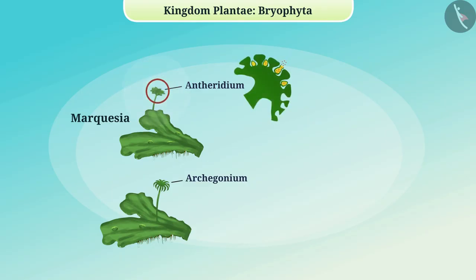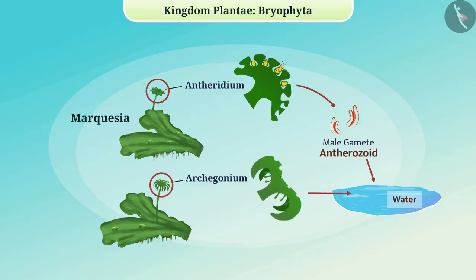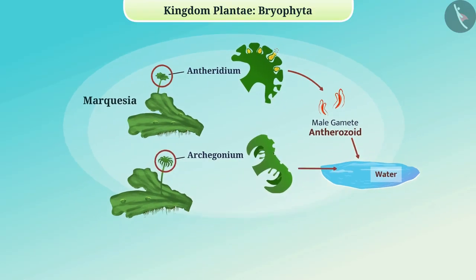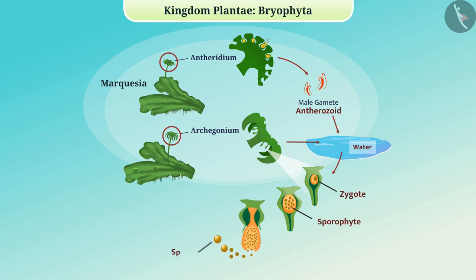The male sex organ is called the anthridium and the female sex organ is called the archegonium. From the anthridium, the male gamete — the antherozoid — is released into water, where it fertilizes the female gamete egg to form a zygote. The zygote develops into a sporophyte, some of whose cells are converted into spores that produce new organisms.